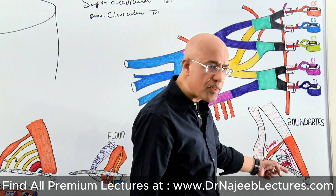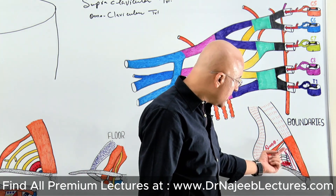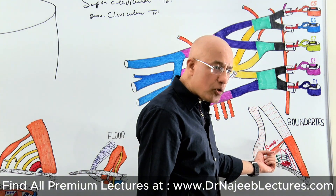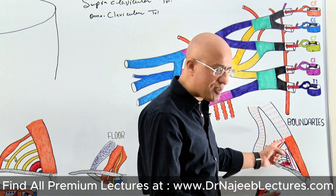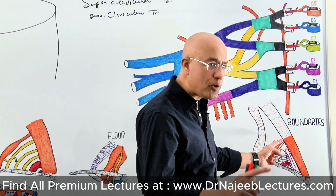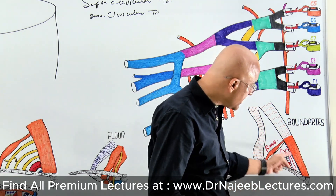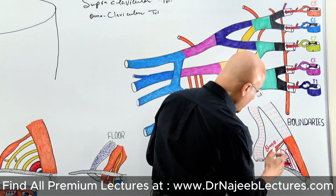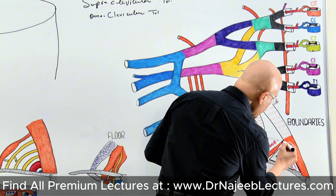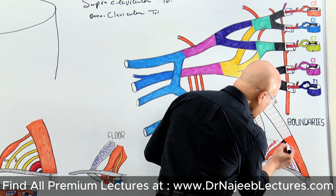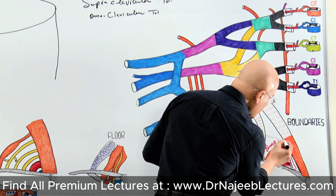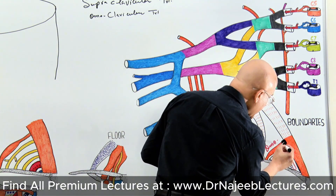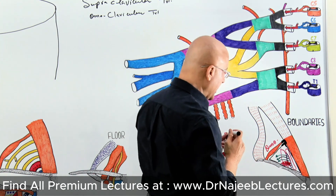Inferiorly it is bounded by the clavicle, and above it is bounded by the obliquely placed inferior belly of the omohyoid. This point where the omohyoid is meeting the sternocleidomastoid is called the apex of the triangle.